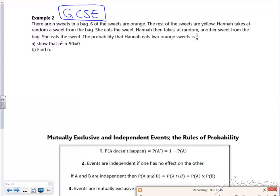So it says there are N sweets in a bag, six of the sweets are orange, the rest of them are yellow. So I've got orange sweets and I've got yellow sweets. The probability of me choosing orange is going to be six out of N, because I've got six oranges out of N sweets.